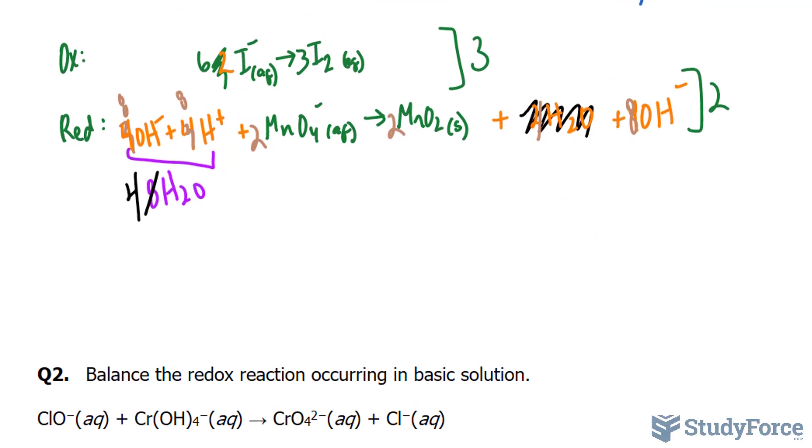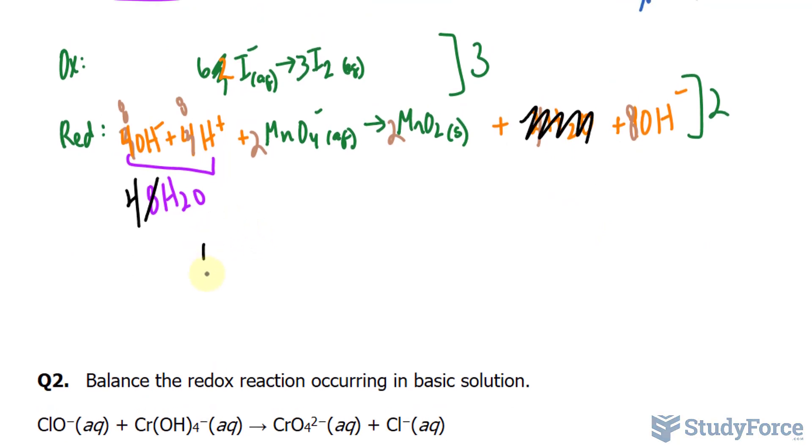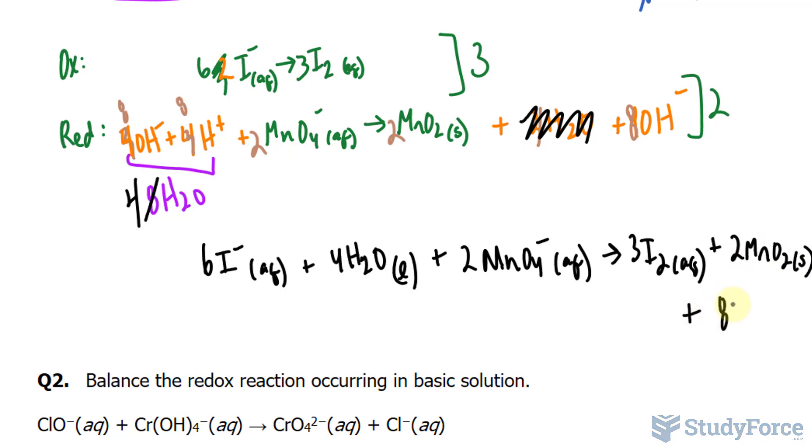And now we can combine the reactants and the products together. So 6I minus plus 4H2O, that's in its liquid state, plus 2MnO4 minus manganate ions, yielding 3I2 aqueous plus 2MnO2, that's in its solid state, plus 8OH minus aqueous ions.